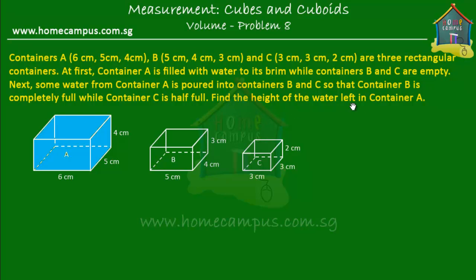Find the height of the water left in container A. So next, some water from container A was poured into B as well as into C. Let's draw what happened afterwards — after water was poured from container A into containers B and C.